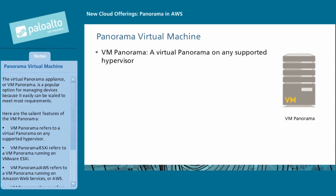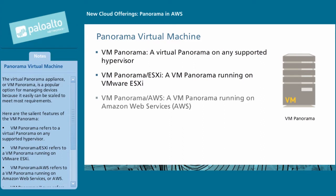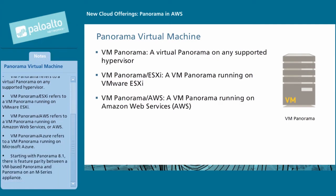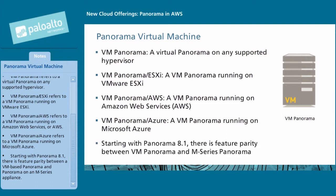VM Panorama refers to a virtual Panorama on any supported hypervisor, including VMware ESXi, Amazon Web Services (AWS), and Microsoft Azure. Starting with Panorama 8.1, there is feature parity between a VM-based Panorama and Panorama on an M-Series appliance.